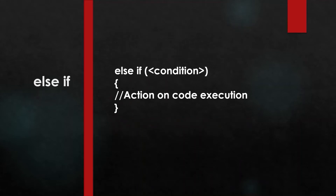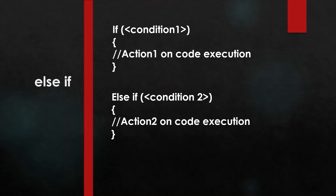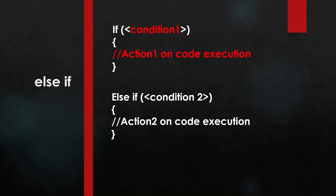The syntax of else if is to write the else keyword, then a space, then the if keyword — the two keywords used together — then put the condition in brackets, then opening and closing curly brackets. Within these brackets you write the code to execute when that condition is true. You can also write if and else if together: if condition one is true, action one is taken.